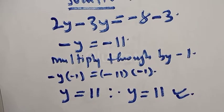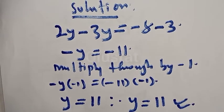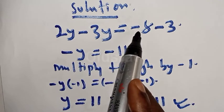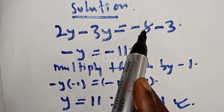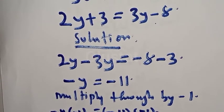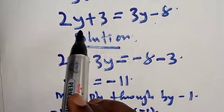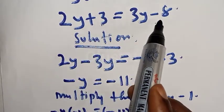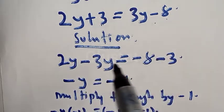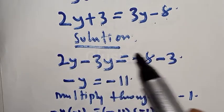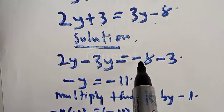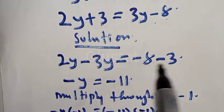You can see that it's very simple. Let's check again. The equation says 2y plus 3 is equal to 3y minus 8. Then we collect like terms — that is, if you collect like terms, you have 2y minus 3y is equal to minus 8 minus 3.